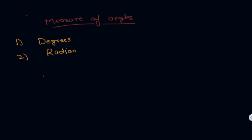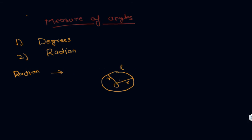So let's understand what a radian is and how to measure it. Radian, as the name suggests, comes from the relationship between the angle subtended by an arc at the center of a circle and the radius. We have a circle with radius r and an arc of length equal to r. One radian is the measure of the angle subtended by an arc of length r at the center.